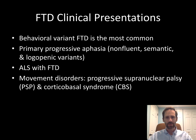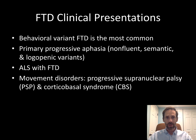There are three main subtypes of frontotemporal degeneration. The behavioral variant is the most common, and there are two other subtypes which are considered classes of primary progressive aphasia — the non-fluent and semantic variants. Frontotemporal degeneration can also come with other diseases like amyotrophic lateral sclerosis or ALS, sometimes called Lou Gehrig's disease, and may also go along with movement disorders like corticobasal syndrome or progressive supranuclear palsy.